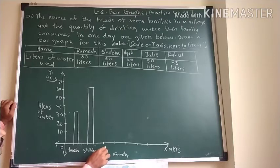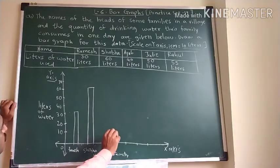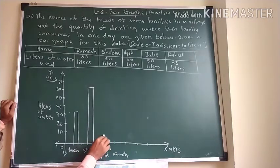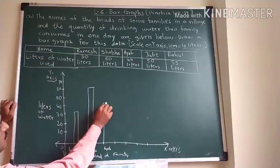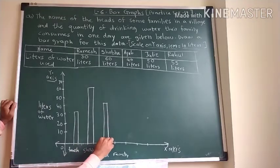Next is Ayub. Ayub's family is using 40 liters. So up to 40 we have to draw. See here is the 40. So this bar will become 40.